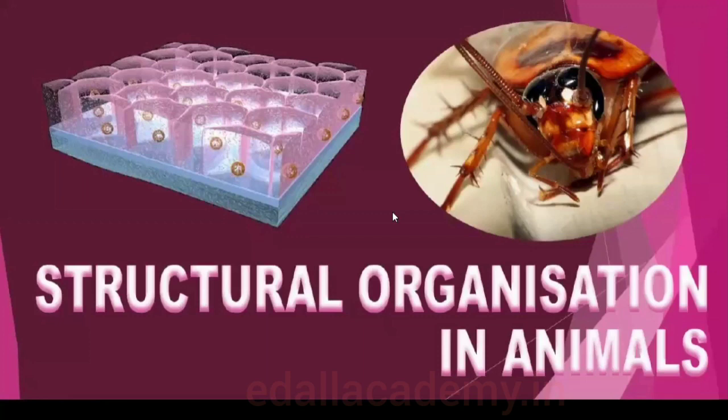Chapter 7: Structural Organization in Animals. Topics to be covered are 7.1 Animal Tissues, and 7.2 Organ and Organ System of Cockroaches.